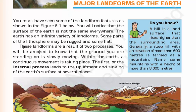In page 1, we will read about how landforms are a result of two processes. You will be amazed to know that the ground you are standing on is slowly moving. Within the Earth, a continuous movement is taking place. The first, or the internal process, leads to the upliftment and sinking of the Earth's surface at several places. To make you understand in a simple manner, I want you to watch this video.